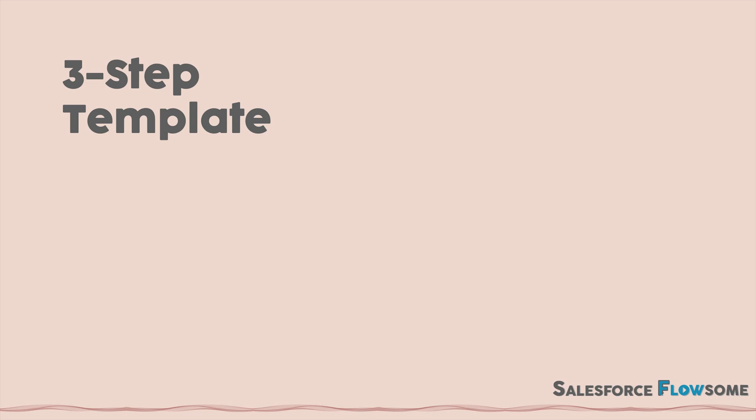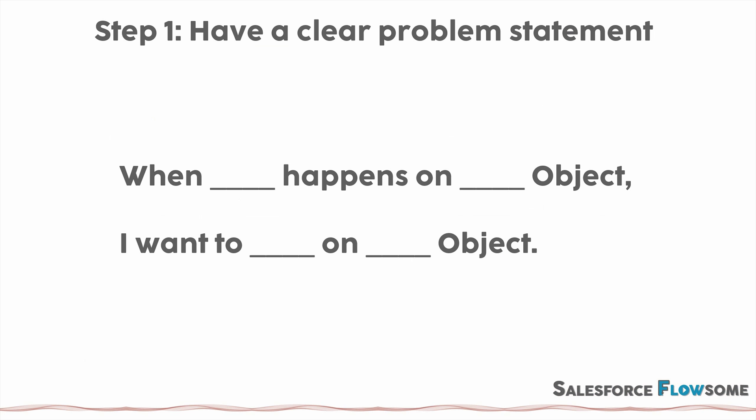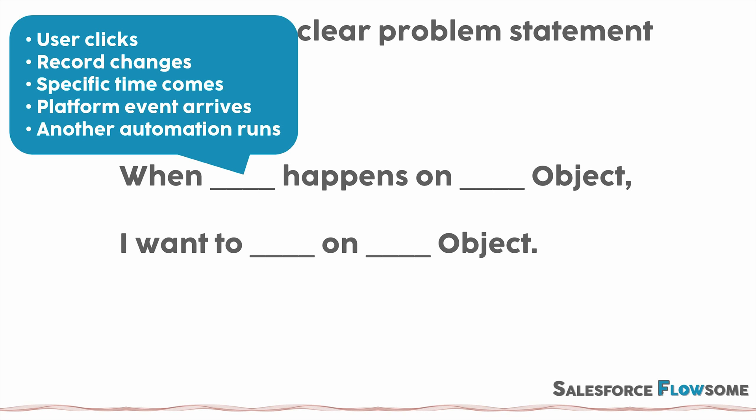Now let's practice with a template and an example. The example today is: when an opportunity is closed won, we want to check a box on the related account and the related contacts identified from the opportunity contact role object. So let's start with step 1 — have a clear problem statement. You always want to use this problem structure: when something happens on which object, I want to do something on which object. For the first blank, you can fill in values such as user clicks, record changes, specific time, platform event arrives, or another automation runs. Each of these values corresponds to a specific type of flow. If you want to understand more, you can see our 'all about flow' section.